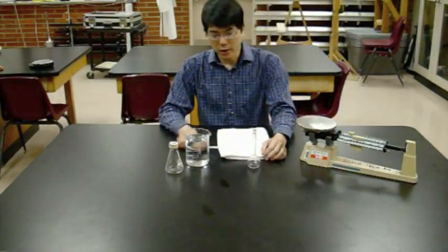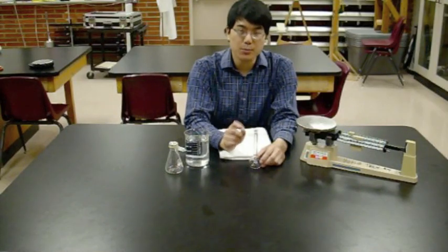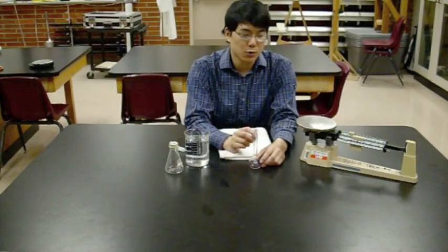The goal of Part 2 is to measure the volume, the mass, of 50 milliliters of water. So you need to have a device that can very accurately measure 50 milliliters of water.